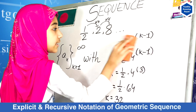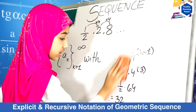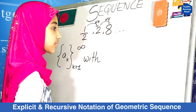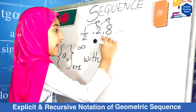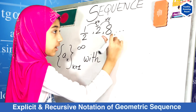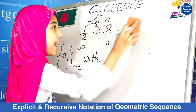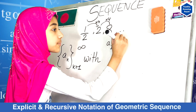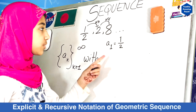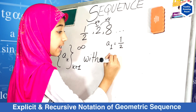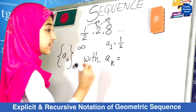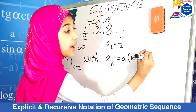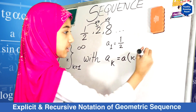Now I'm going to show you the recursive formula — the recursive way of writing this geometric sequence. There's only a little bit of change. A sub 1 is the first term right here, so the first term is half in this sequence. That would be A sub 1. And then A sub k — this is where the real formula starts — A sub k is equals to A, the previous term, multiplied by your common difference, which is 4.